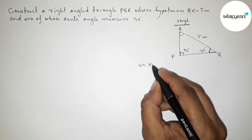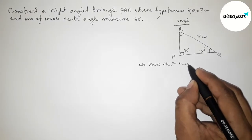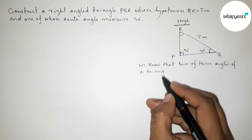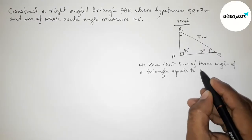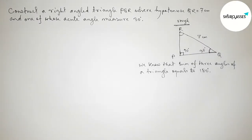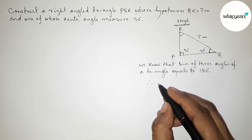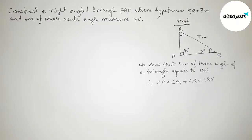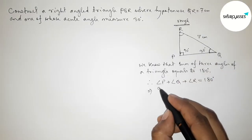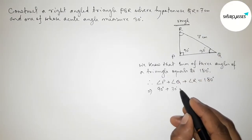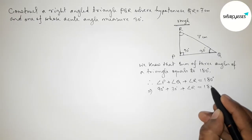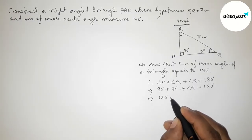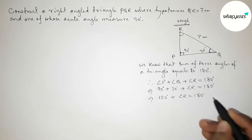We will find angle R using an important theorem: the sum of three angles of a triangle equals 180 degrees. Therefore, angle P plus angle Q plus angle R equals 180 degrees. Putting in the values: 90 degrees plus 30 degrees plus angle R equals 180 degrees, giving us 120 degrees plus angle R equals 180 degrees.